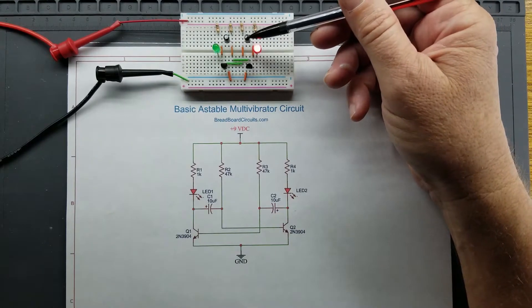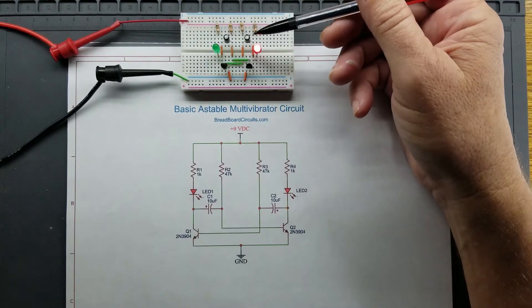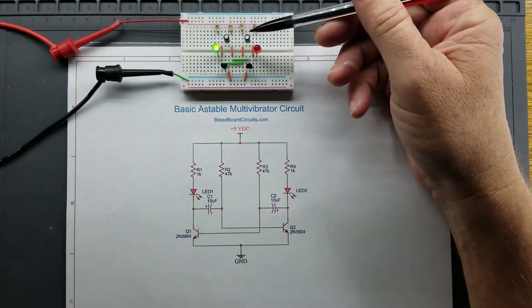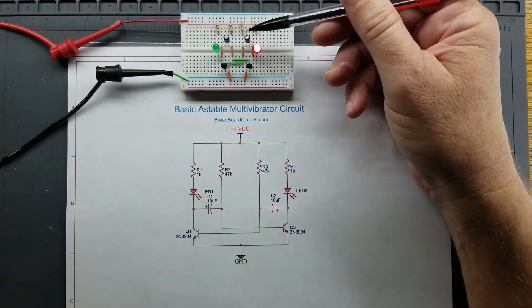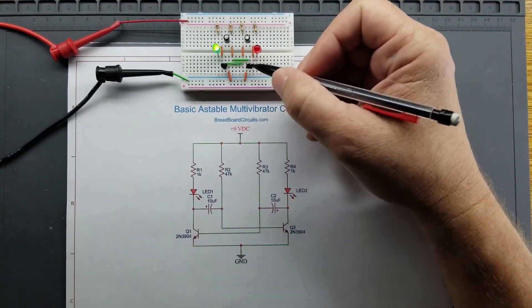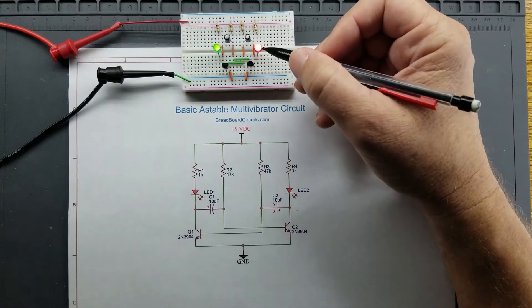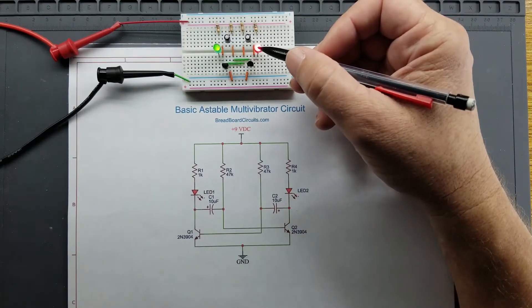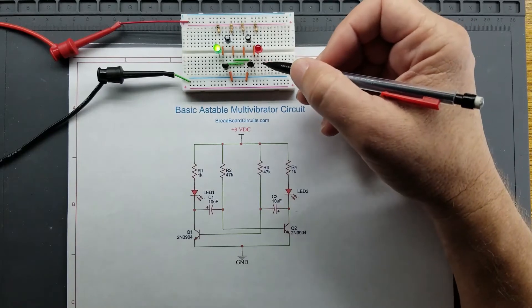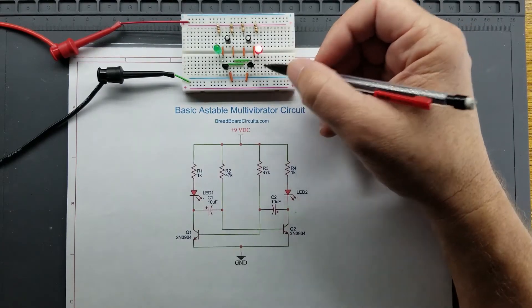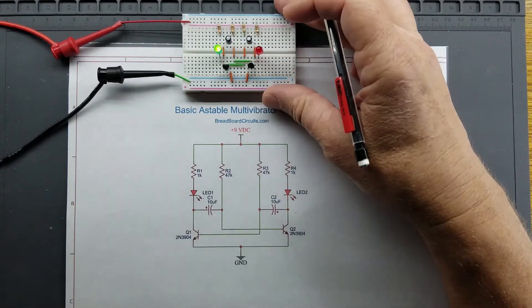This can be compared to a monostable, which means one state. For example, if you were to find some place in the circuit that you could apply a voltage to, and you could light this red LED for say one second, it would go off and revert back to its original state. That's why they call it a one state monostable.